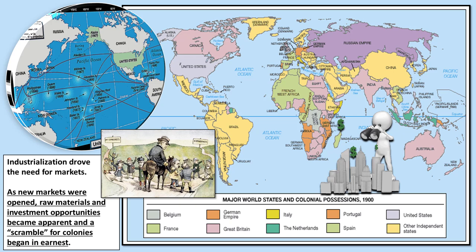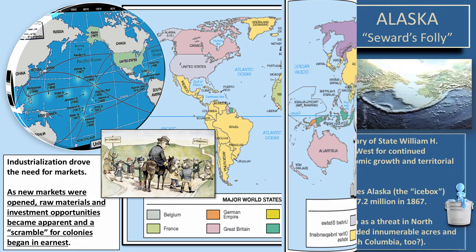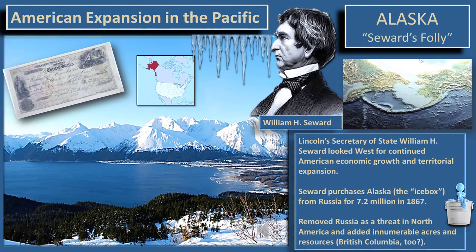As an extension of manifest destiny, you have the continental United States formed — you have California now. But what about going further west? Almost immediately at the end of the American Civil War, the United States looks west. We'll start with American expansion in the Pacific by talking about how America acquires Alaska, and then we'll move on to Hawaii from there. America's Secretary of State during the Lincoln years was William Henry Seward.